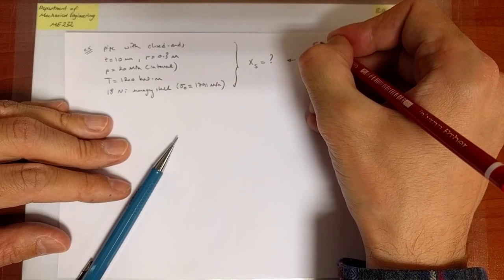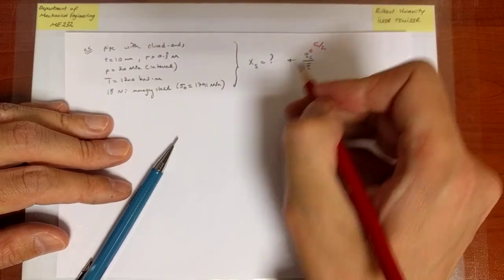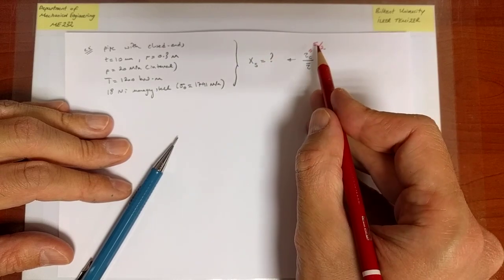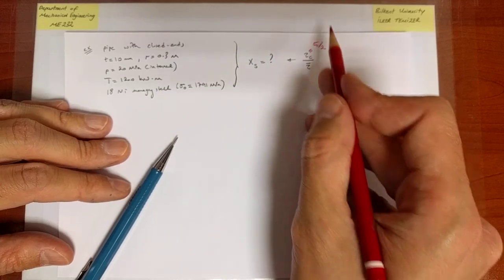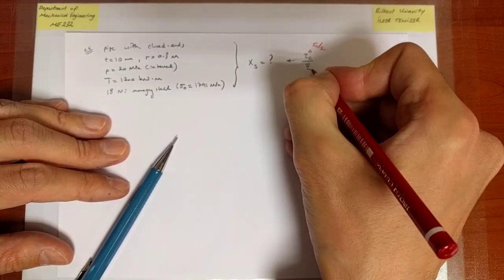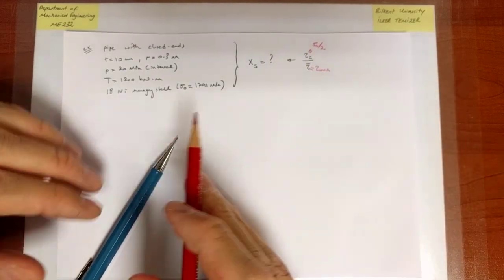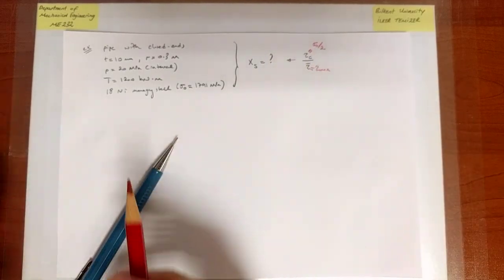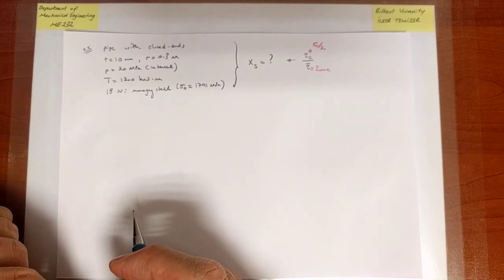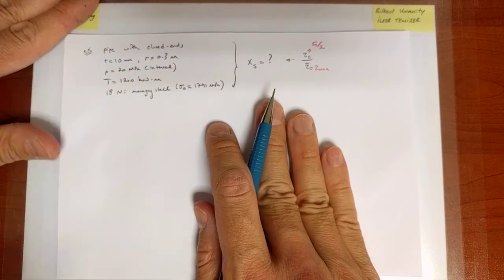The shear strength corresponds to sigma-naught over two — that is, the yield strength corresponds to a maximum shear stress of sigma-naught over two. And tau-bar is, according to the Tresca or maximum shear stress yield criterion, the absolute maximum shear stress observed in the structure.